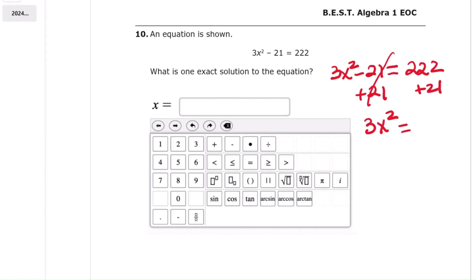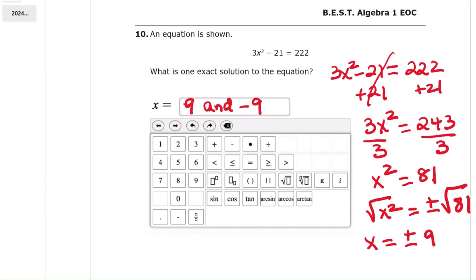That gives 3x squared equals 243. Step 2, divide both sides by 3. That gives x squared equals 81. Step 3, take the square root of both sides. That gives x equals positive 9 or negative 9. Final result, x equals 9 or x equals negative 9.